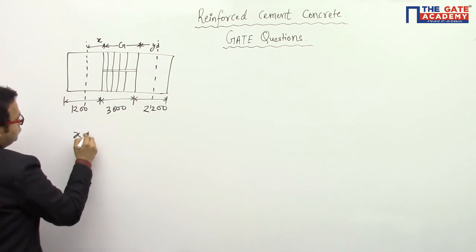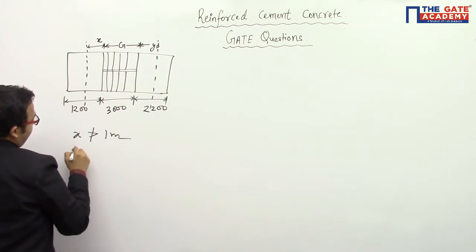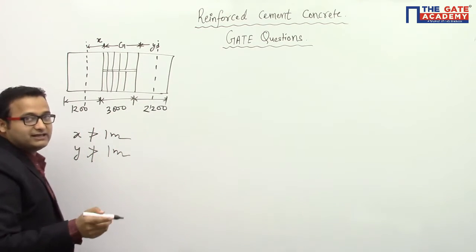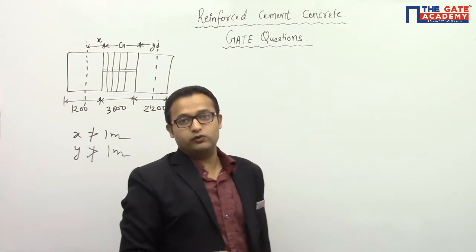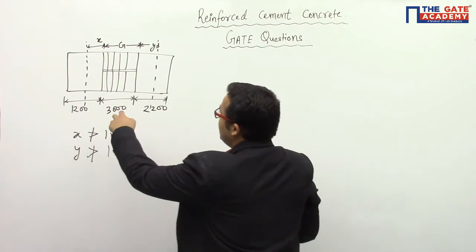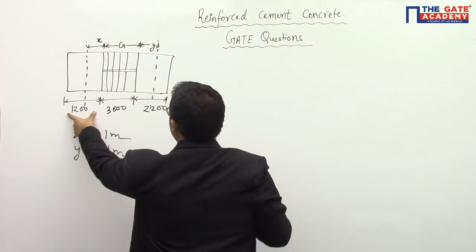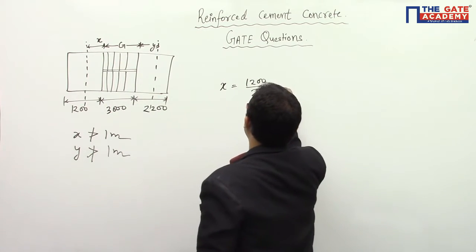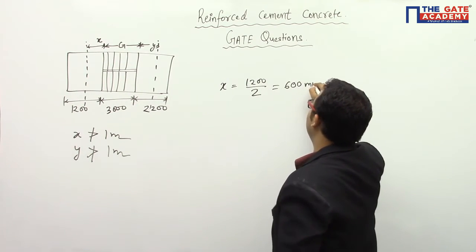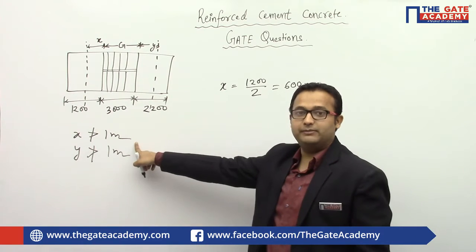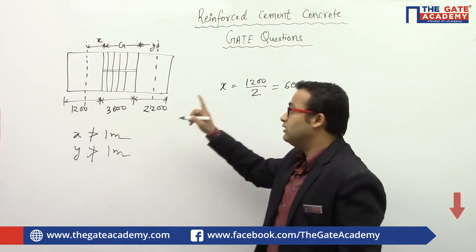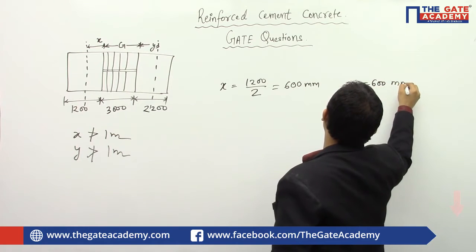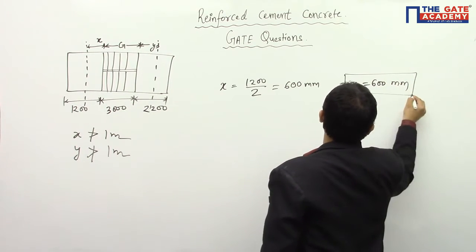One important thing to notice: x should not be greater than one meter, and y should not be greater than one meter. If either is greater than one meter, we take the value equal to one meter. Here, x equals half of 1200 mm, which is 600 mm. Since 600 mm is less than one meter, we take x equal to 600 mm.